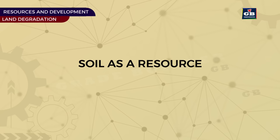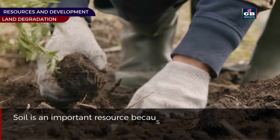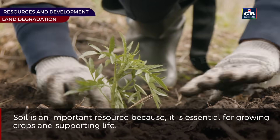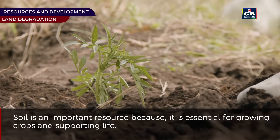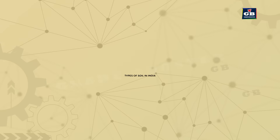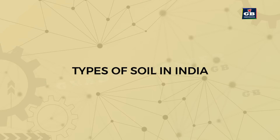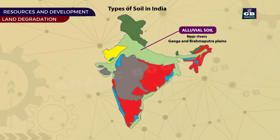Soil as a resource. Soil is an important resource because it is essential for growing crops and supporting life. Let us see different types of soil in India. Alluvial soil is found near rivers and is very fertile — for example, the soil in the Ganga and Brahmaputra plains.